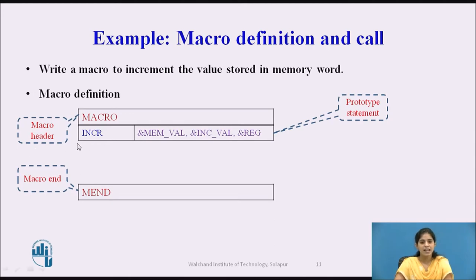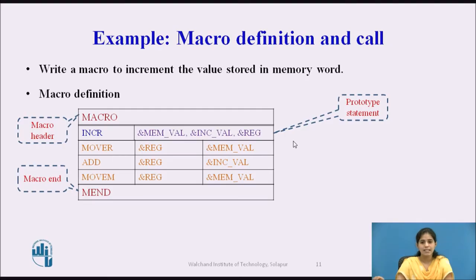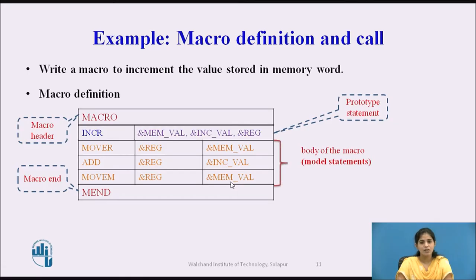The prototype statement indicates the name of the macro and its parameter list. The macro name is INCR and it takes three parameters: &MEMVAL, &INCVAL, and &REGISTER. The INCR macro has three model statements: MUR &REGISTER, &MEMVAL; ADD &REGISTER, &INCVAL; and MOVM &REGISTER, &MEMVAL. These three model statements form the body of the macro.